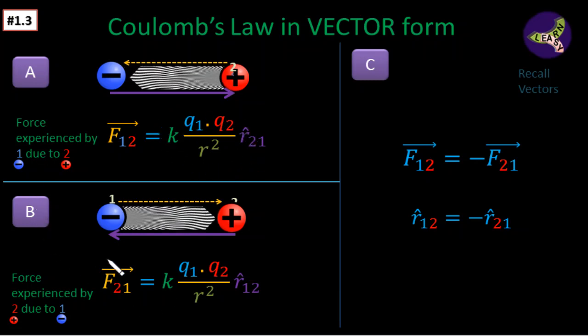Similarly in part B, we can see that F21 means force experienced by the second charge due to 1. The charge 2 is experiencing force because of charge 1, so that can be written in this manner. F21 is equal to K Q1 Q2 by R square, and there is a unit vector R cap 1 2, and the distance is from 1 to 2.